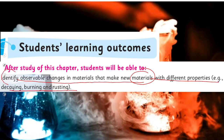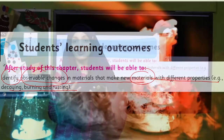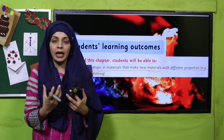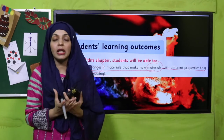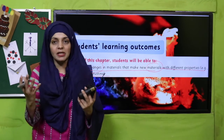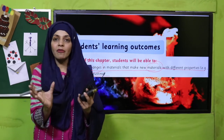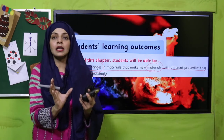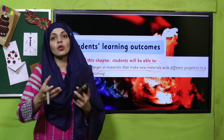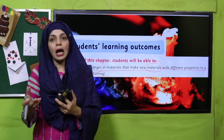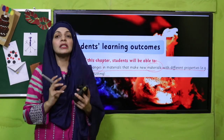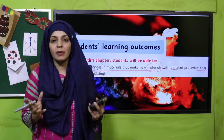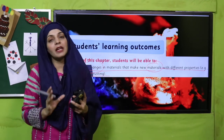Today, students will identify which observable changes happen in materials — which properties change in such a way that you cannot get the original material back, because something new is formed. For example, if you burn wood, you cannot get the wood back in its original state; it turns to ash and produces smoke. You cannot create wood from it again. This irreversible reaction is what we call a chemical change, and today we will study chemical changes.